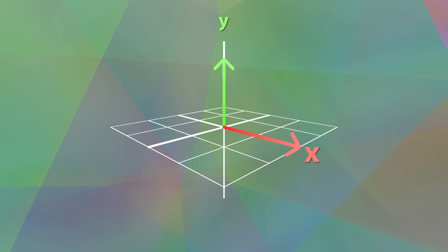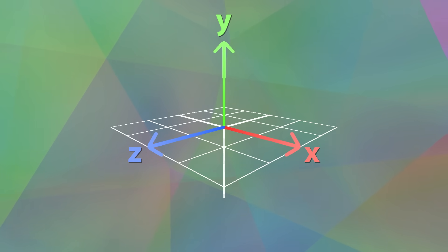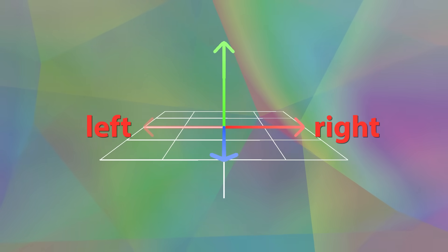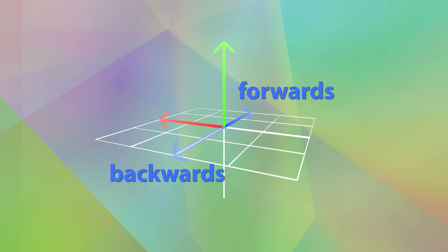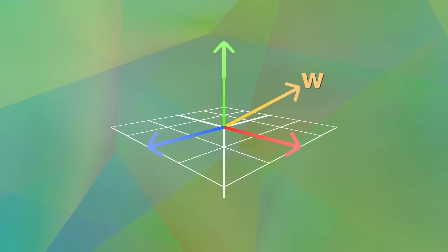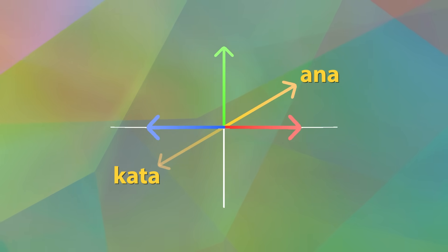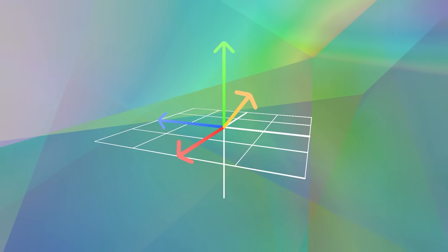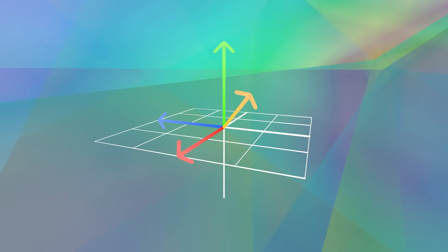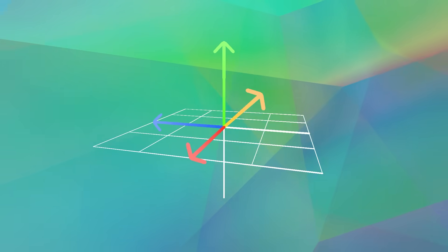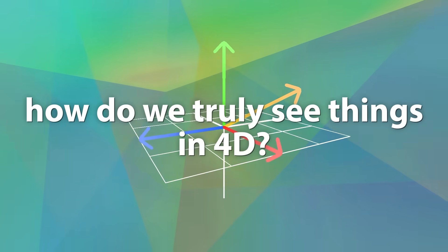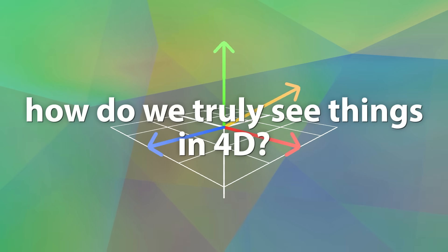In 3D, we have X, Y, and Z, which corresponds to left and right, up and down, and forwards and backwards. When we move to 4D, we add W, which corresponds to the directions Ana and Kata. I've just drawn an arbitrary direction because technically, there is no correct way to draw this in a 3D view. So that begs the question: how do we truly see things in 4D?